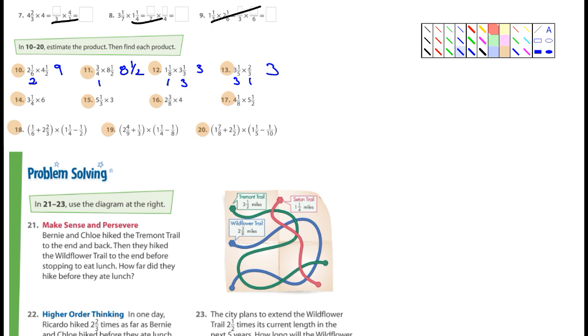This is easy. Estimating is really pretty quick, pretty easy. It's either going to be a 1 or a half or 0. 3 and 1 quarter is close to 3. 6 is 6. What's 3 times 6? 18. There's your estimation. 5 and 1 third is close to 5. 3 is 3. What's 3 times 5? 15. There's your estimation.